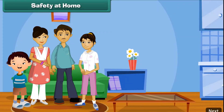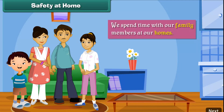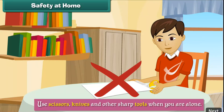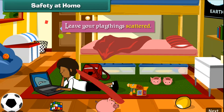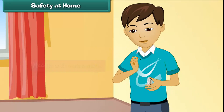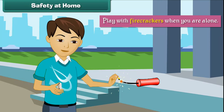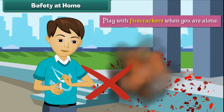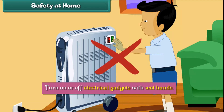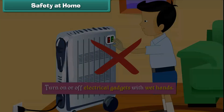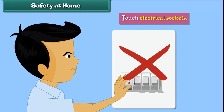Safety at home. We spend time with our family members at home, so it is important to keep it safe. You must never use scissors, knives, and other sharp tools when you are alone; never leave your playthings scattered; never meddle with matchsticks; never play with firecrackers when alone; never turn on or off electrical gadgets with wet hands; and never touch electrical sockets.